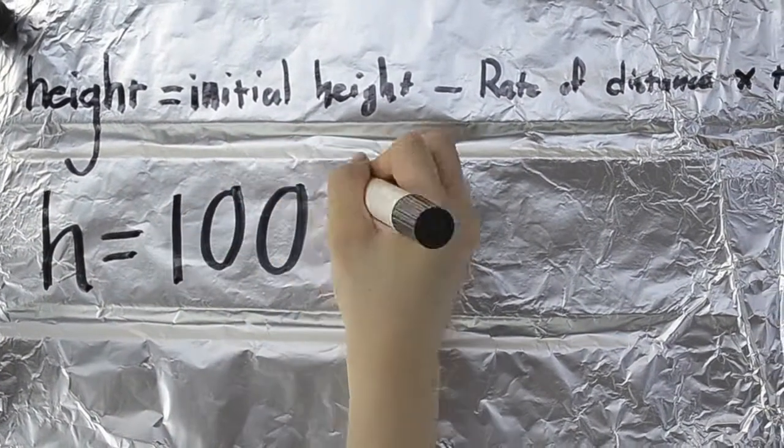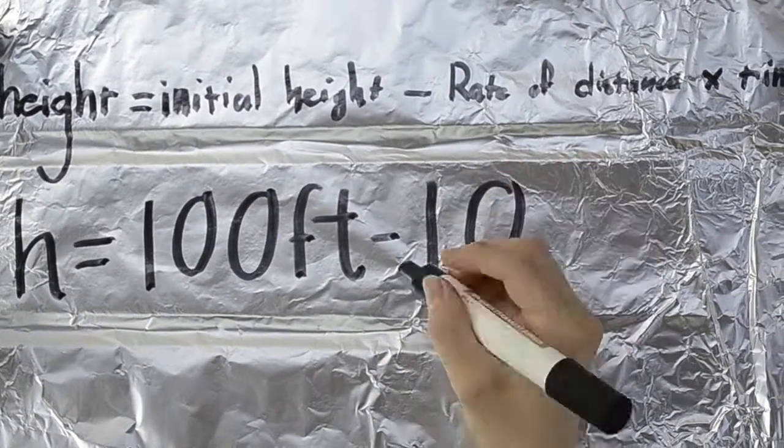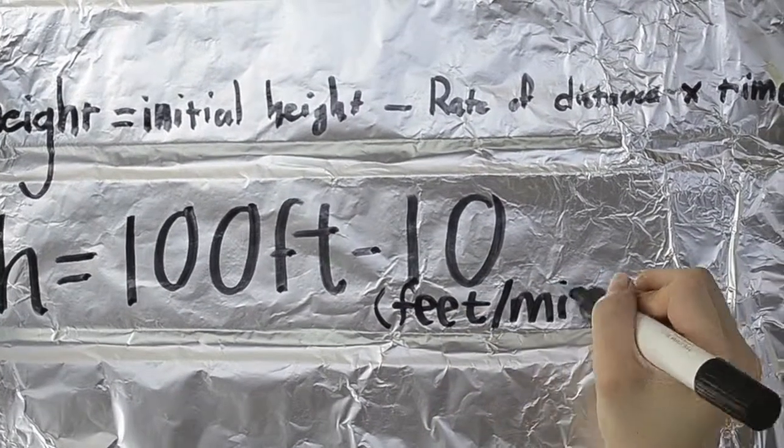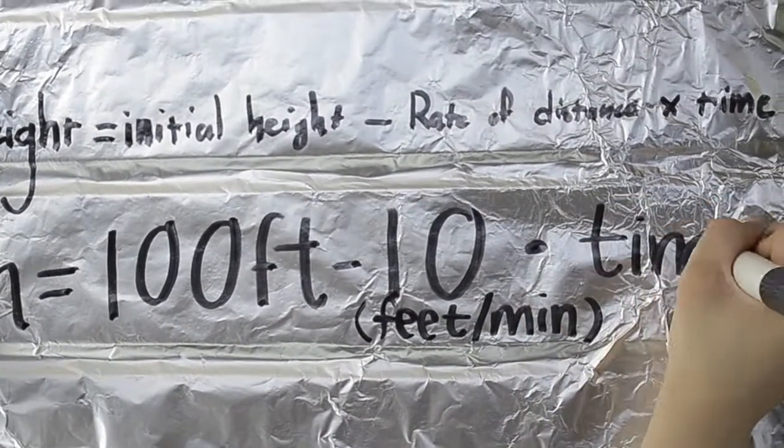To solve the equation, you must plug in 100, which is the initial height, minus 10, which is the rate of distance, multiplied by time.